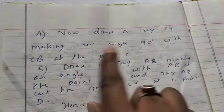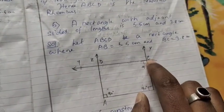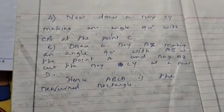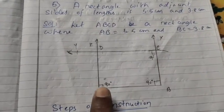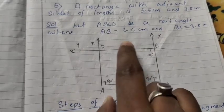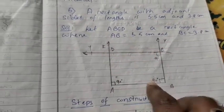Step 4: draw a ray CY making an angle of 90 degrees with CB at point C. Step 5: draw a ray AZ making an angle of 90 degrees with AB at point A. These two rays will intersect at point D. So ABCD is our required rectangle.